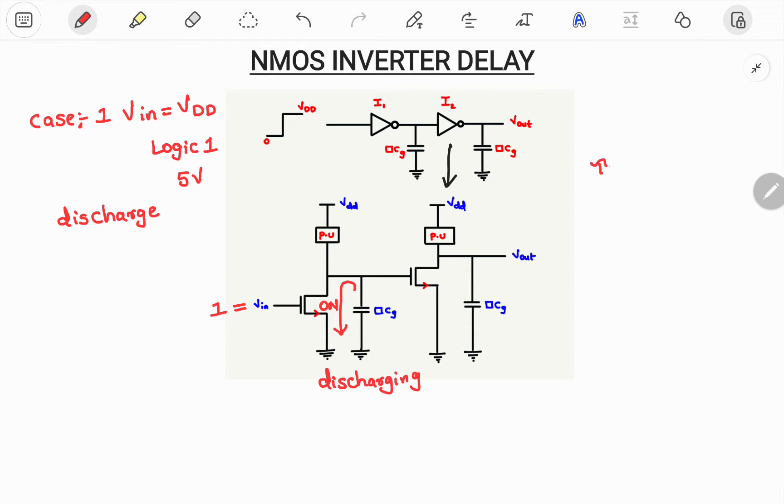So generally time constant is something indicated with tau called as R into C. So every wire will have some amount of delay associated with it, indicated with tau, R into C. Now for this case number 1 we have to write the discharging time constant.